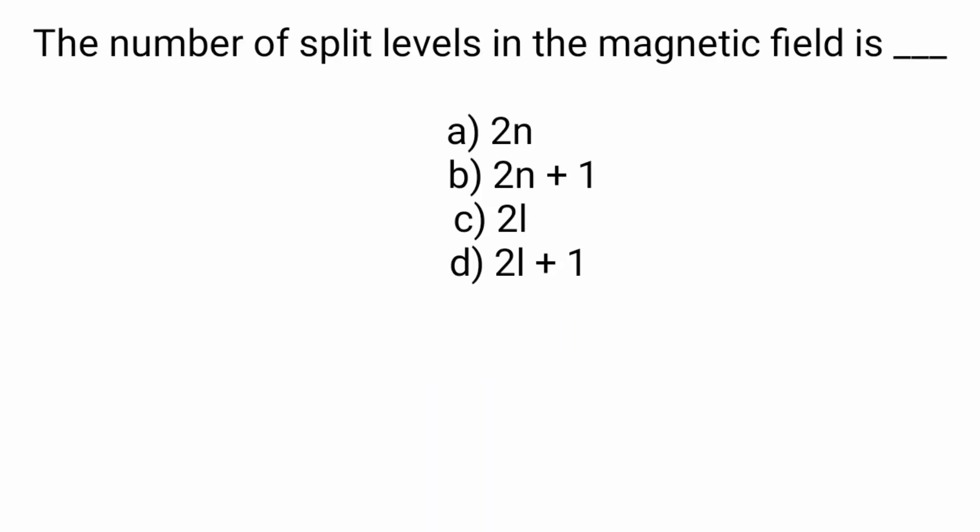Next, the number of split levels in magnetic field is. So option d is 2L plus 1. So this pattern is the amount of splitting in the magnetic field. That is signature of the strength of the magnetic field.